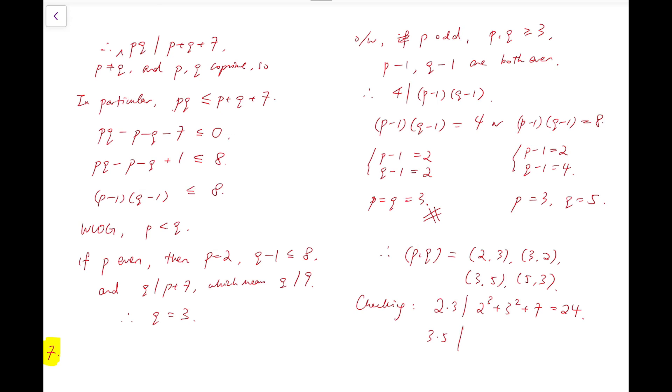And we can check the ordered pairs. And the first pair 2, 3 is true, so 6 divides 24. And for 3 and 5, 15 divides this sum, which is 375. So they are all correct. And these are the final answers.